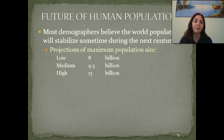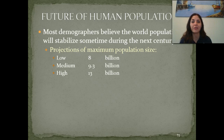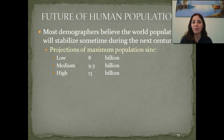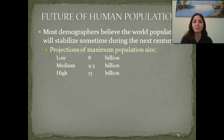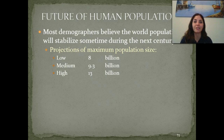As for the future of human populations, most demographers believe the world population will eventually stabilize sometime during the next century. Projections of the maximum population size vary: 8 billion is extremely low because we're almost there; medium projection is about 9.3 billion; high estimate is about 13 billion. We've discussed that by the year 2050 we might have a world population of 12 billion, so we might actually exceed that 13 billion speculation.